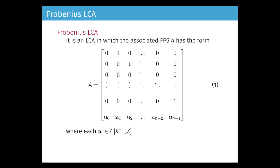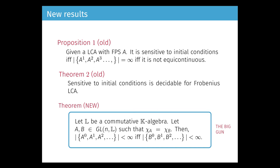What we proved in past work is that given a linear cellular automaton with associated formal power series A, it is sensitive to initial conditions if and only if the cardinality of the set of all powers of A is infinite — which is equivalent to the automaton not being equicontinuous. We are interested in sensitivity to initial conditions and its relation with the set of powers of the formal power series A. A second key theorem is that sensitivity to initial conditions is decidable for Frobenius linear CA.